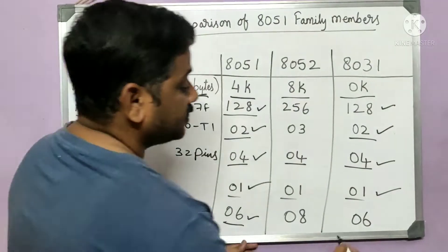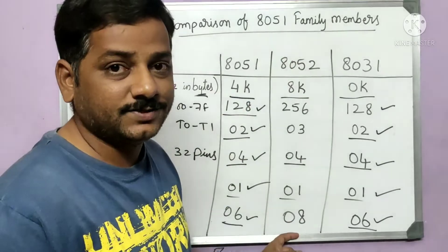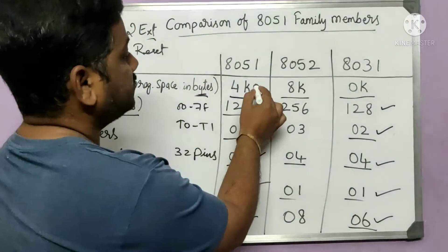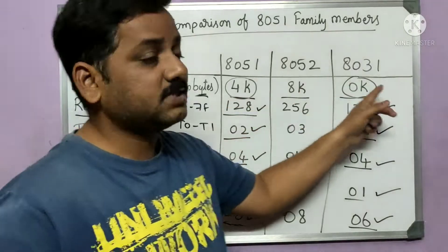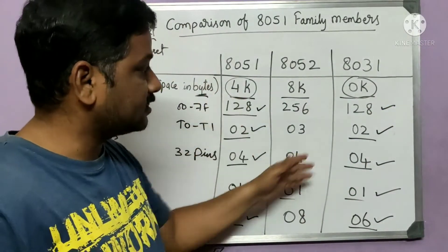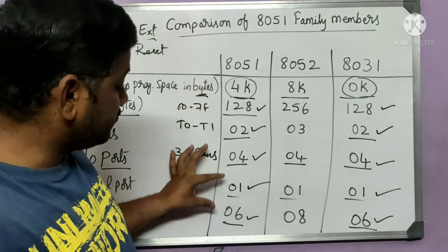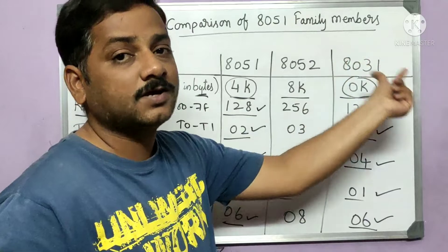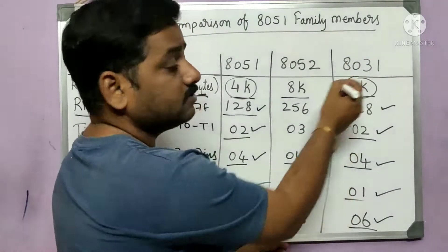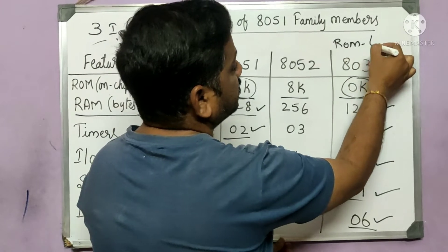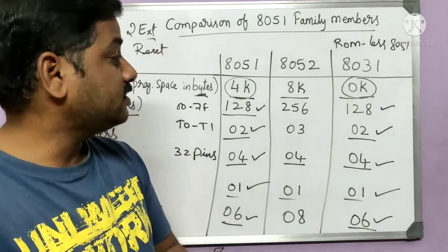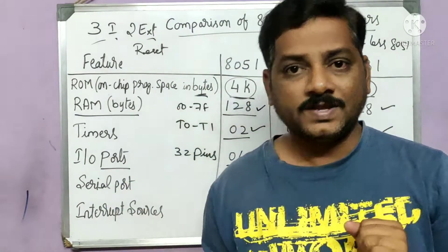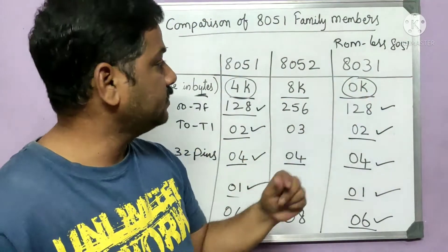The 8051 and 8031 both have six interrupts, whereas the 8052 has eight interrupts. Comparing the 8031 and 8051, the difference is only in ROM — the 8031 has no on-chip ROM, while everything else is the same. Therefore, we can call the 8031 a 'romless 8051' — it has no inbuilt ROM but is otherwise identical to the 8051.